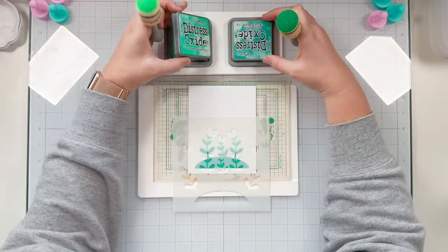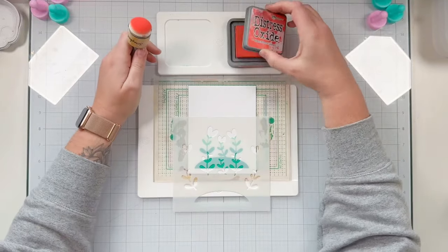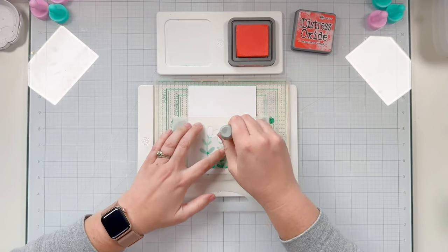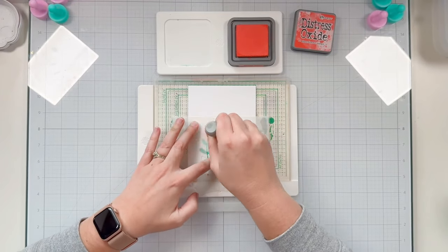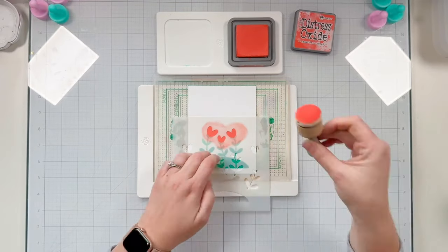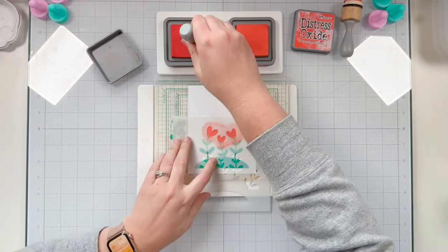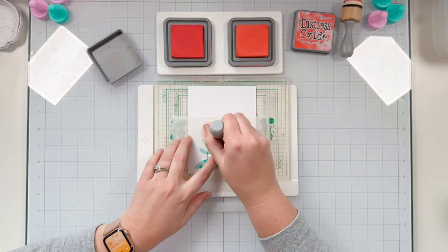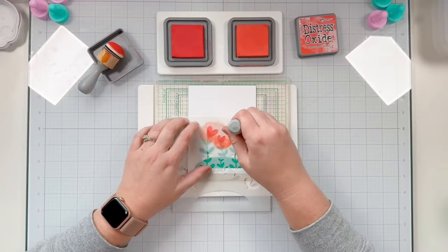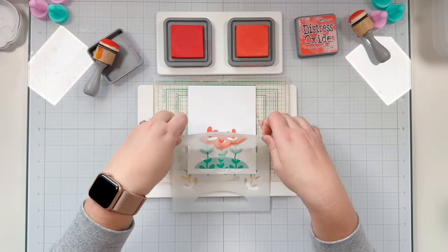I cleaned off my stencil and lowered it down to add those three little heart flowers. For these I'm using Abandoned Coral Distress Oxide to color them in fully but I'm adding a little bit of Barn Door because I wanted to create a two-tone shadow depth and dimension look on these hearts. I'm blending till I'm happy and that will finish off our stenciling.